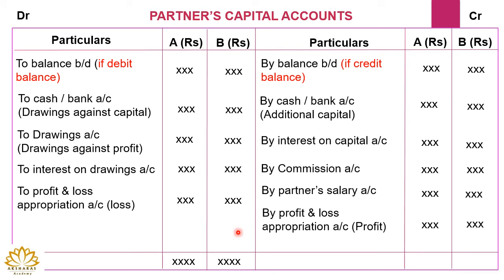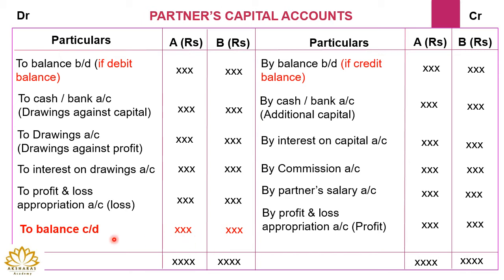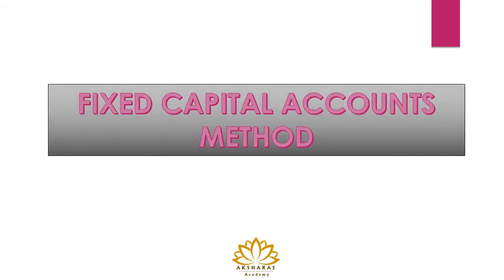Now we have to find out the balancing figure. The balancing figure will be shown as 'To Balance Carried Down' for A and B respectively. This balance carried down will be shown on the liability side of the balance sheet as the capital due to the partners. This completes the format of the partners capital account under the fluctuating capital method.